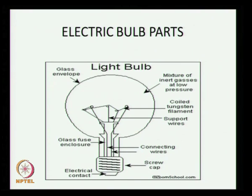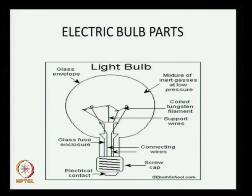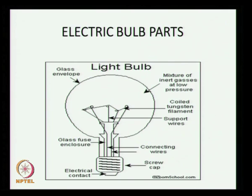It has a screw cap, connecting wires, glass fuse enclosure, glass envelope, tungsten filament — which plays a major role in the electrical bulb — and a mixture of inert gases at low pressure. These are the important parts of the electrical bulb.